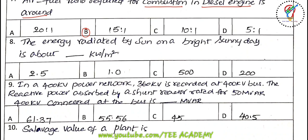Eighth question: the energy radiated by the sun on a bright sunny day is about how many kilowatts per meter squared? The options are 2.5, 1.0, 500, and 200. The answer is 1.0 kilowatt per meter squared — that is the energy radiated from the sun.